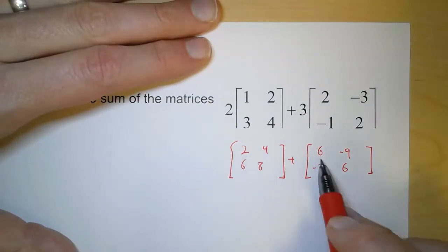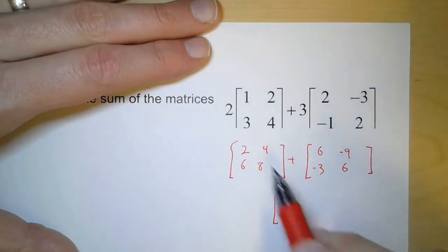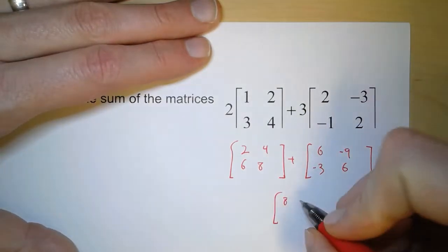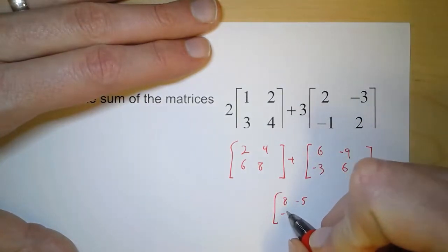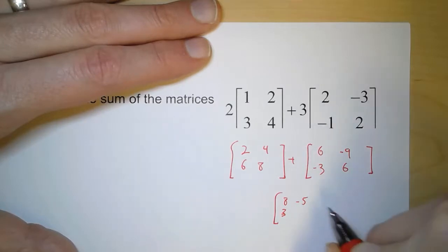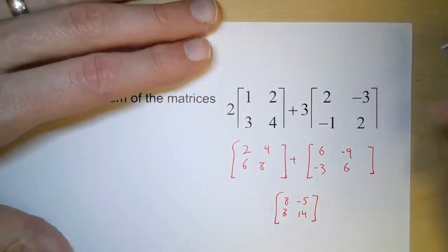So if we add 2 and 6, we get 8 for the top left. 4 plus negative 9 is negative 5 for the top right. 6 plus negative 3 is positive 3 for the bottom left. And then 8 plus 6 is 14 for the bottom right.